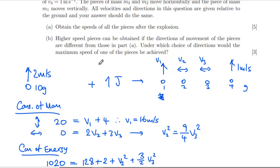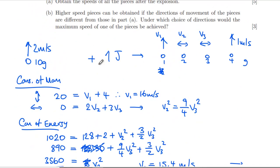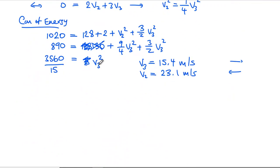Higher speed pieces can be obtained if the directions of movement of the pieces are different from those in part (a). Under which choice of directions would the maximum speed of one of the pieces be achieved? We want to get, but we have to have vertical motion after explosion because of conservation of momentum.